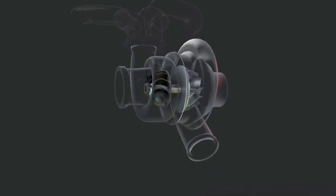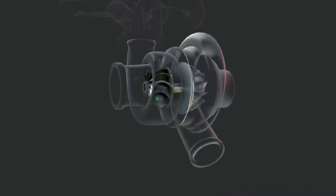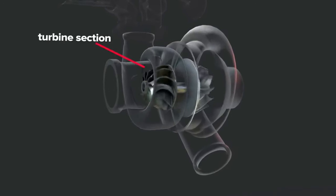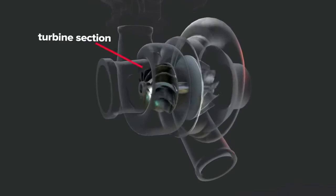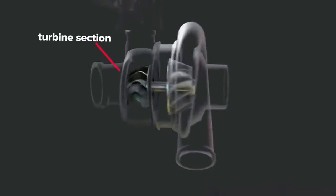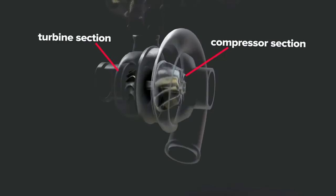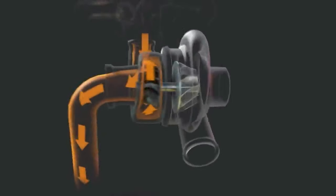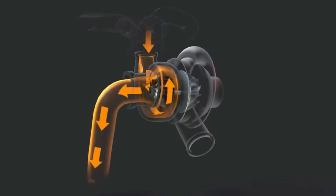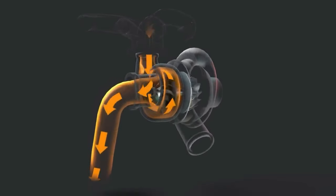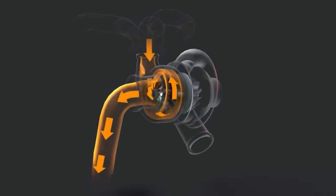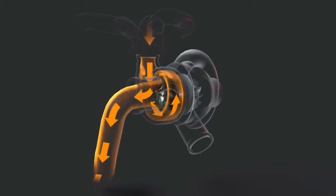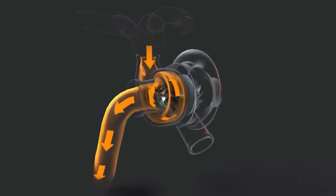A turbocharger is simply a supercharger that is powered instead by a turbine in the exhaust stream. Exhaust heat and pressure drive a turbine wheel that is connected with a compressor wheel via a shaft.